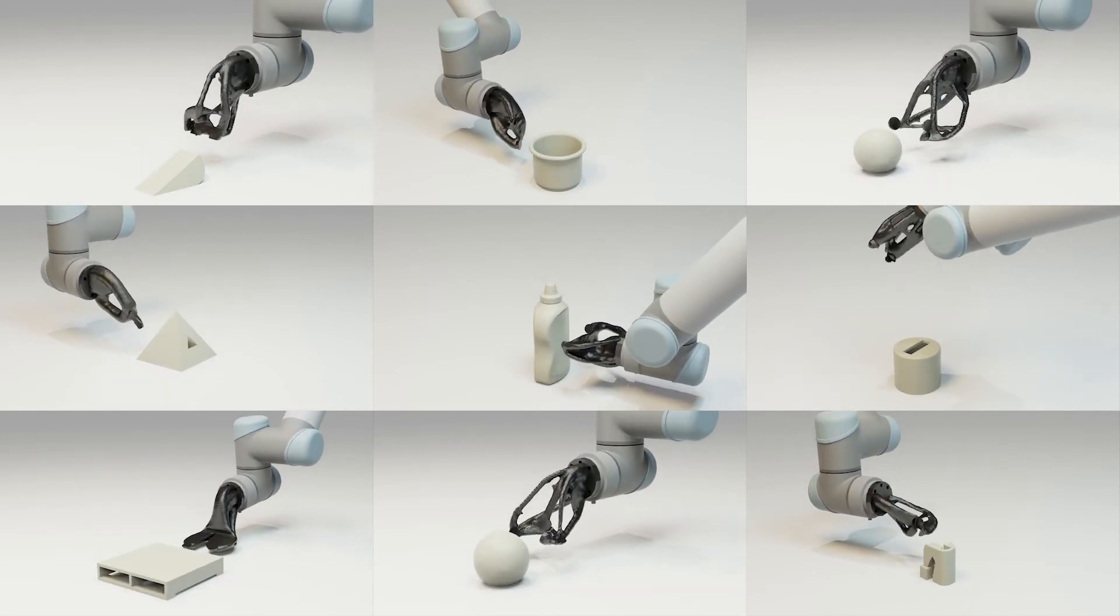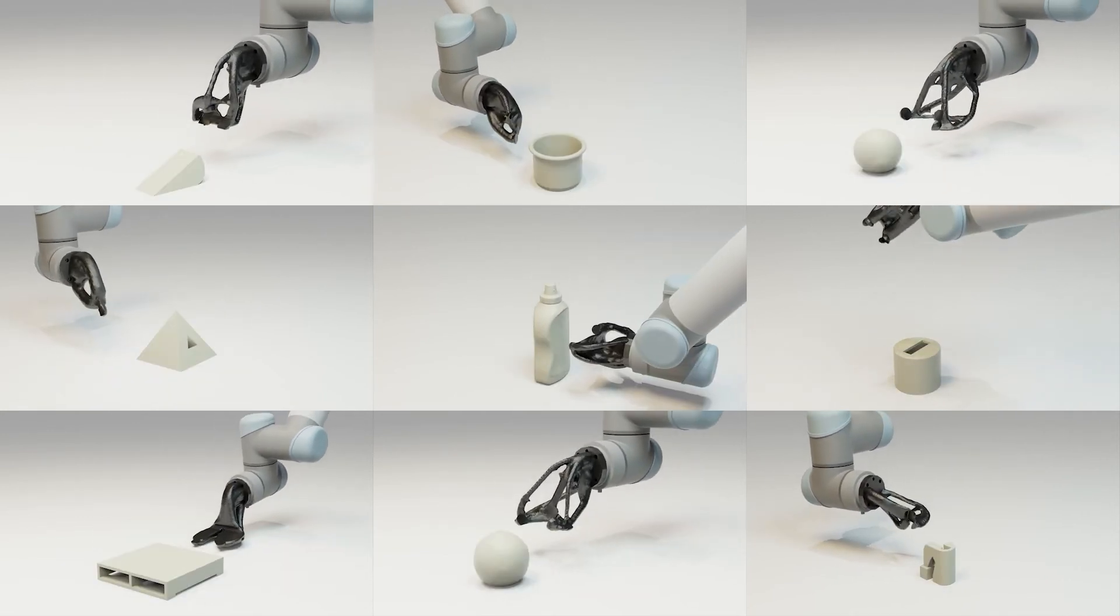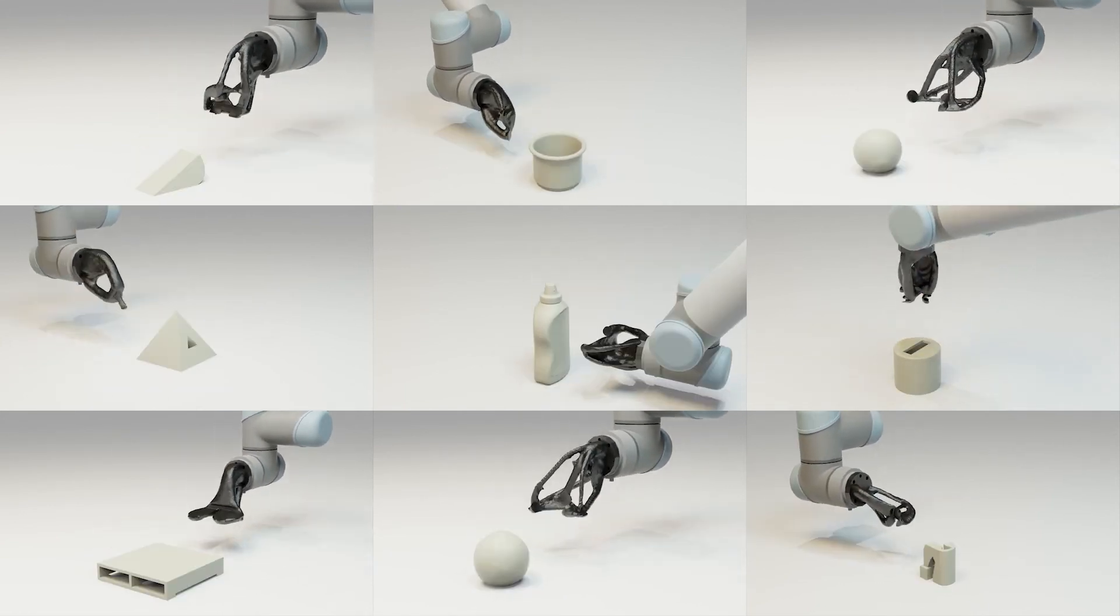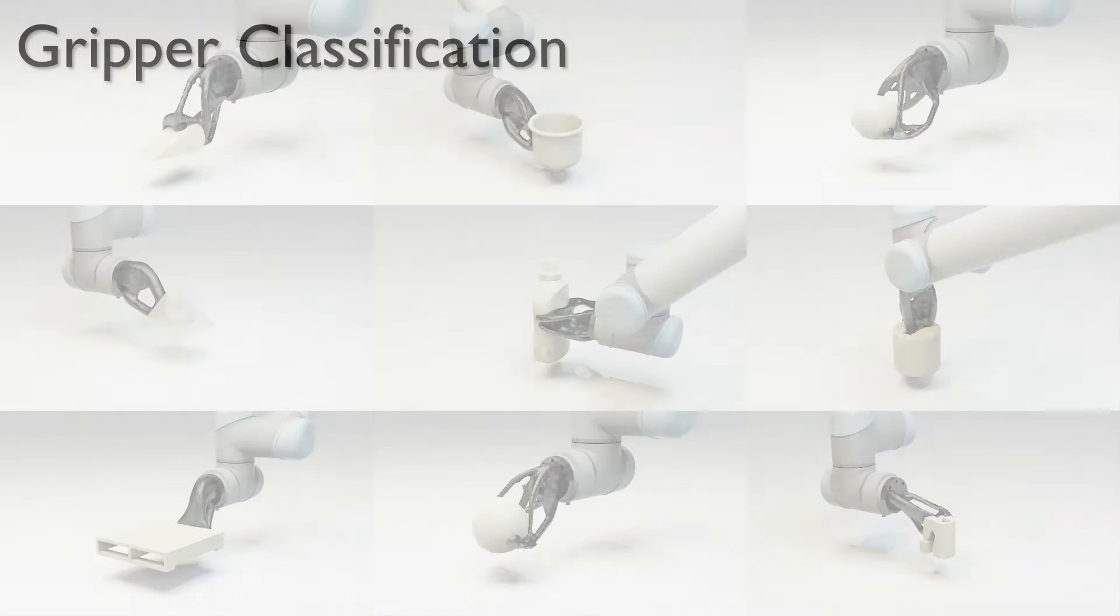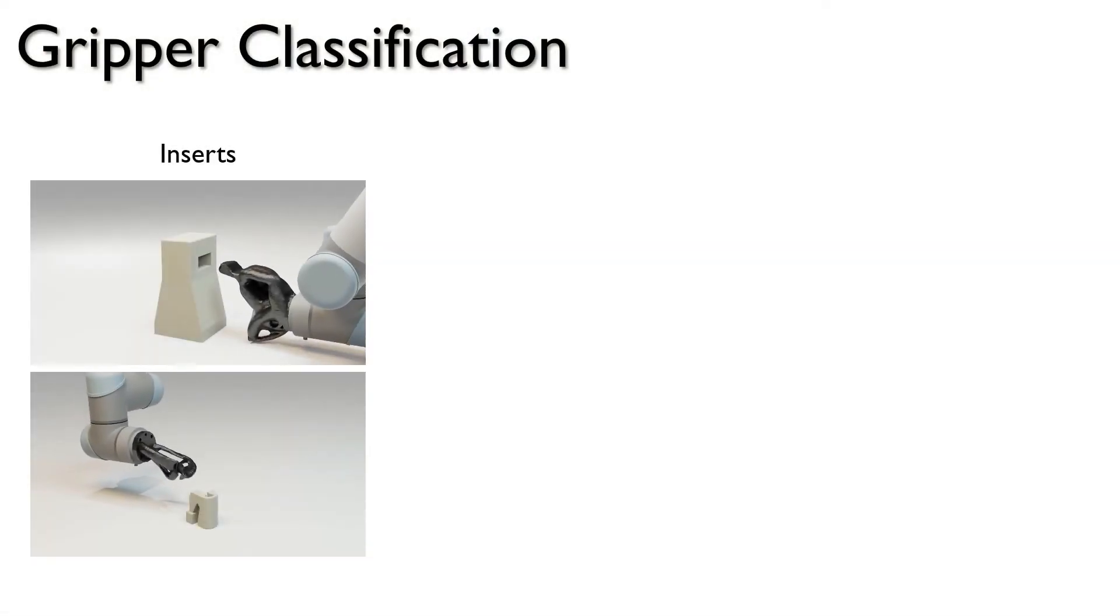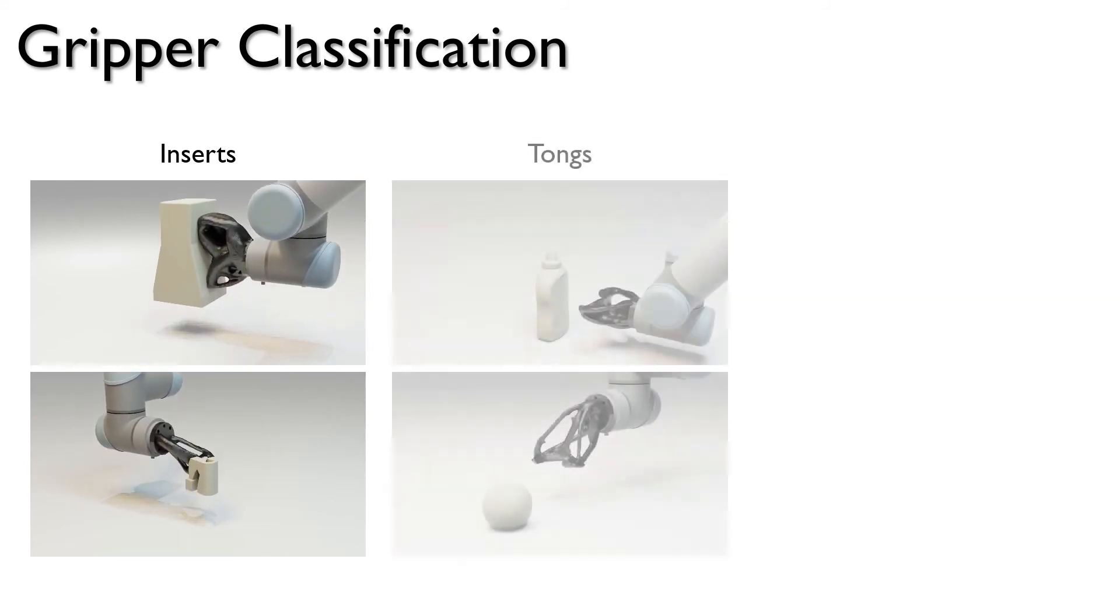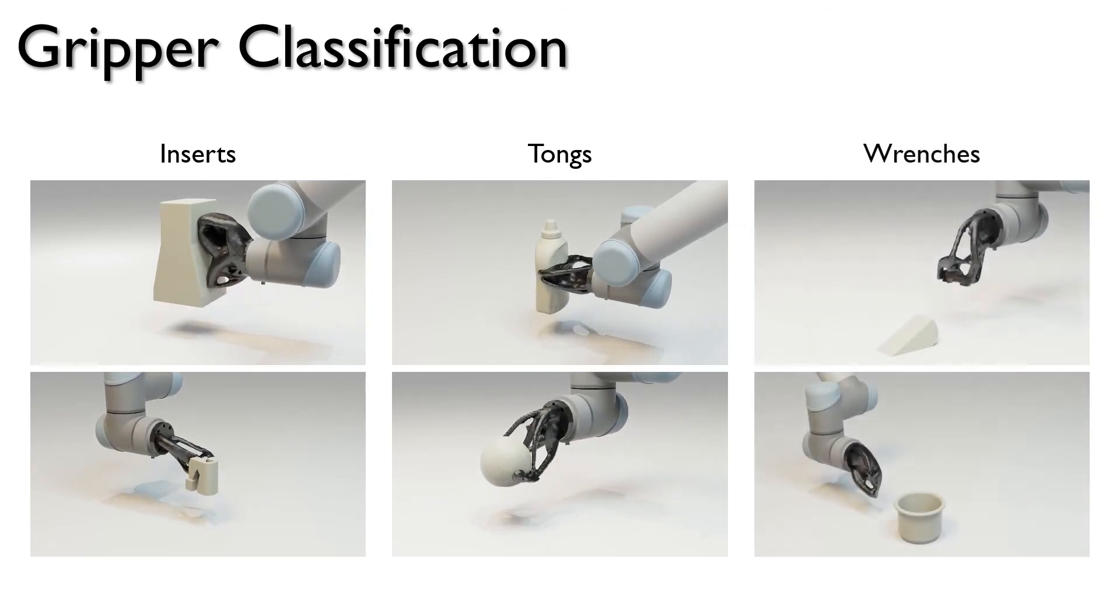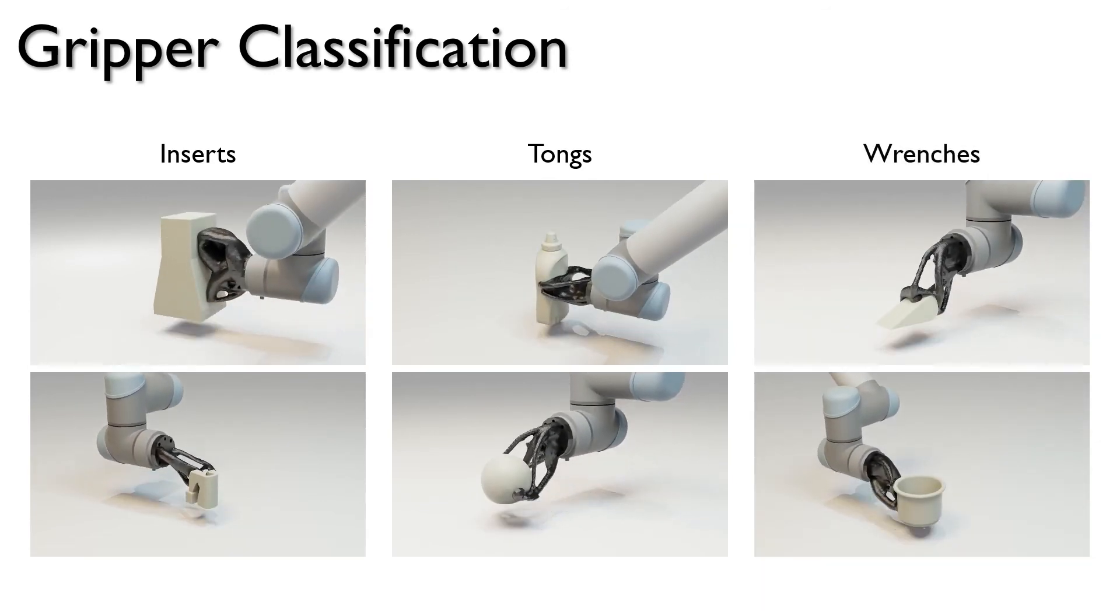While these generated grippers and trajectories are highly customized for each object, we can observe general patterns among these solutions. Looking at the gripper shapes, we can roughly classify them into 3 categories. Inserts take most of the load on a single point. Tongues support the object on both sides. And wrenches apply opposing torque to resist gravity.